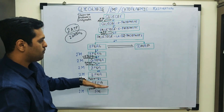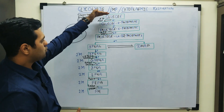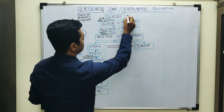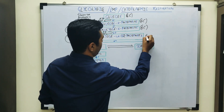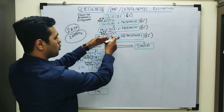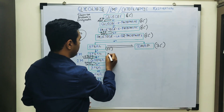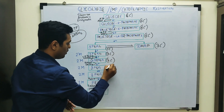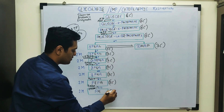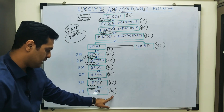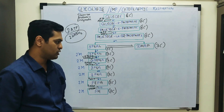Regarding carbon balance: glucose and fructose are hexose sugars containing 6 carbon atoms. After cleavage of fructose 1,6-diphosphate, all subsequent molecules are 3-carbon compounds. The final product, pyruvic acid, is a 3-carbon compound, and since 2 molecules are formed, 2 × 3 = 6 carbons — the reaction is balanced.